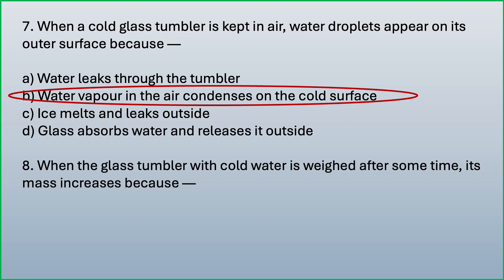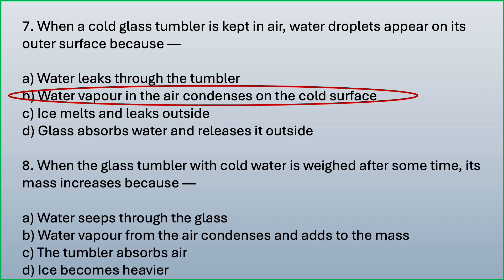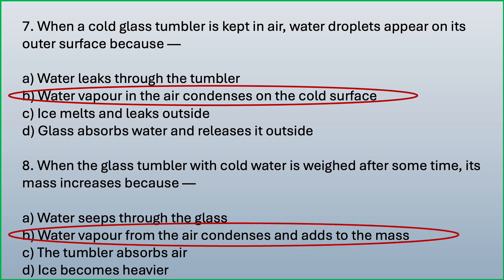When the glass tumbler with cold water is weighed after some time, its mass increases because — options are: water seeps through the glass; water vapour from the air condenses and adds to the mass. Water vapour is not seeping from the glass tumbler; the extra water is getting collected because of condensation.